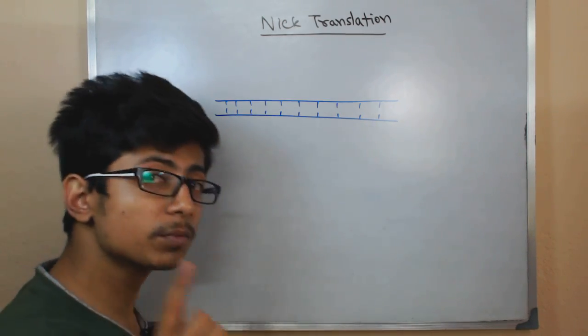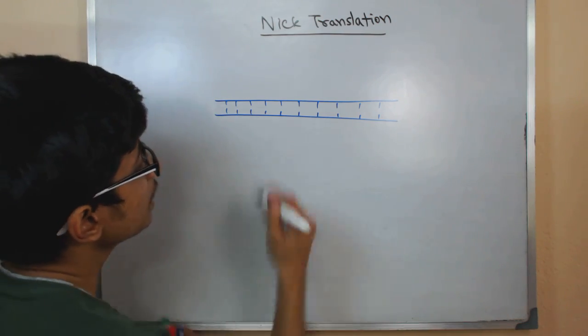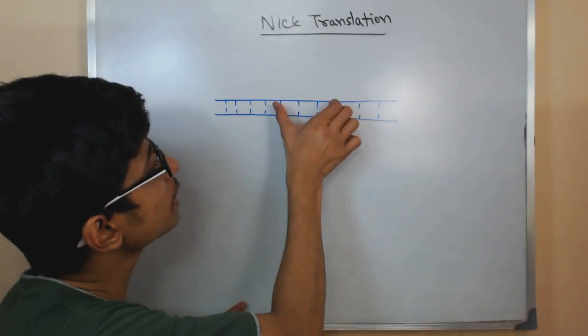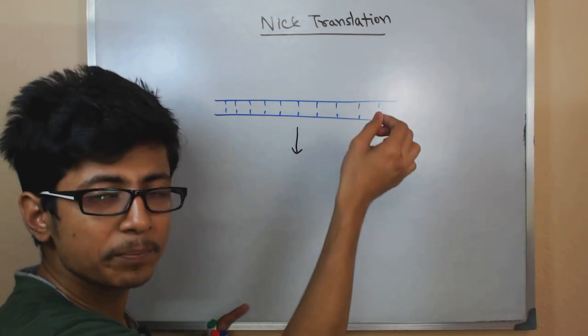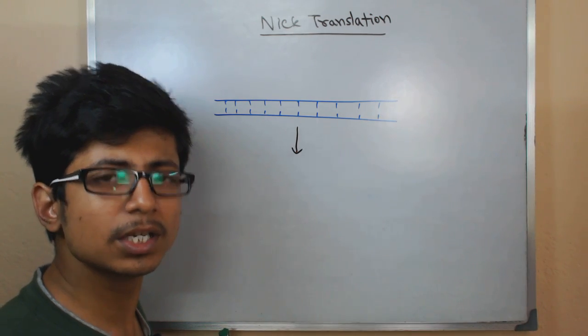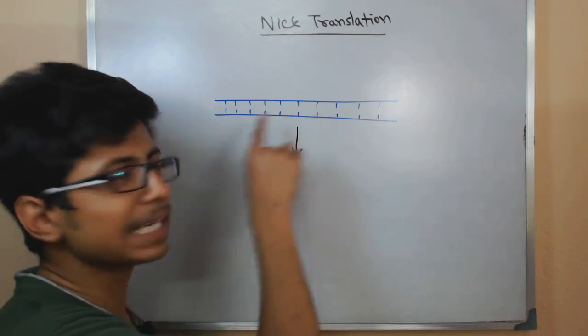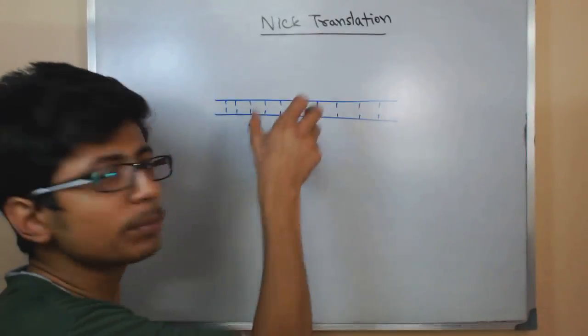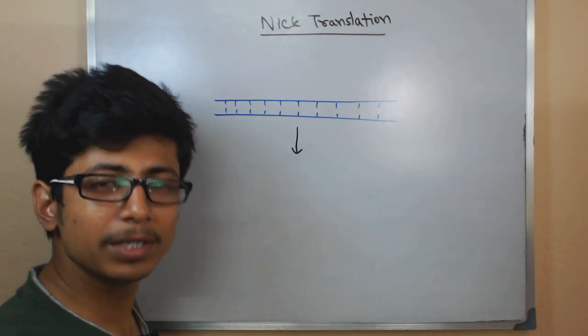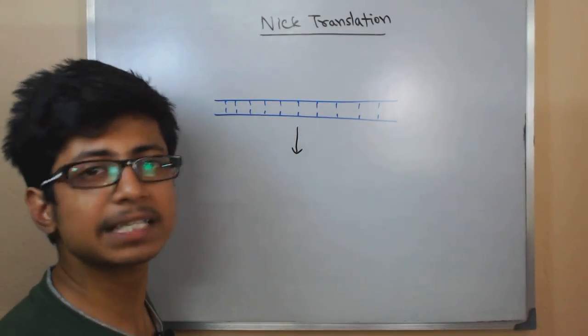Now, what is the nick translation process? Let's look at it step by step. In the very beginning, the main idea is simple: we will take some of the normal nucleotide sequences out of this DNA and insert - we will put certain radiolabeled nucleotide sequences or fluorescently labeled nucleotide sequences in their place so that they will fill that gap. That's the very basic idea.